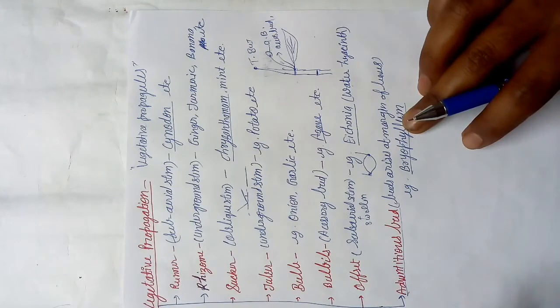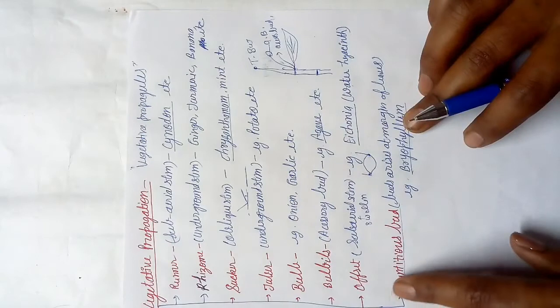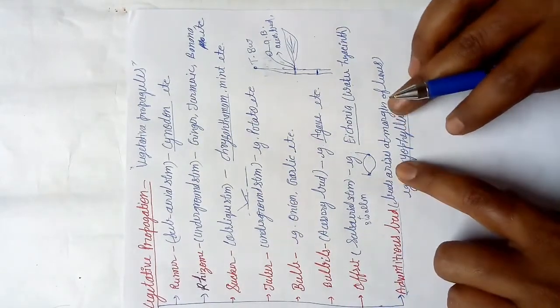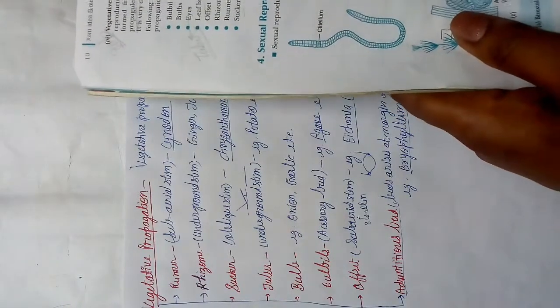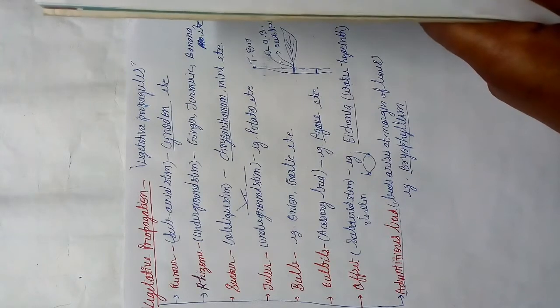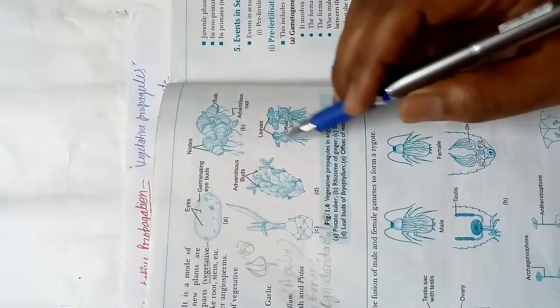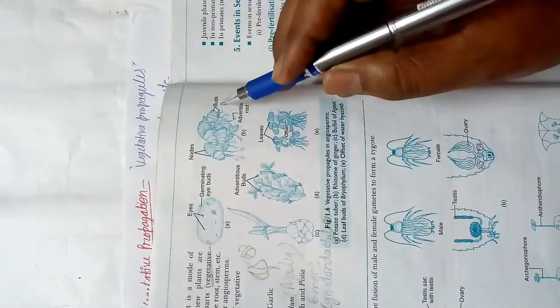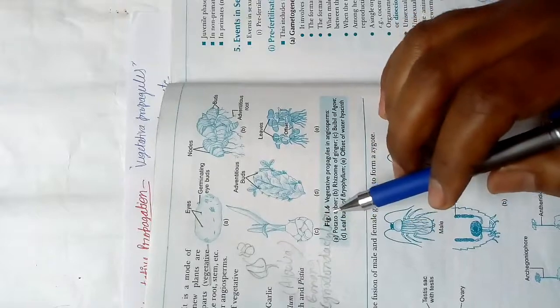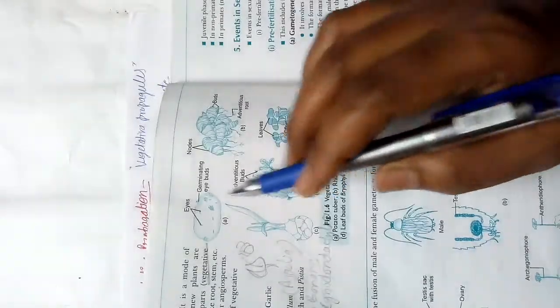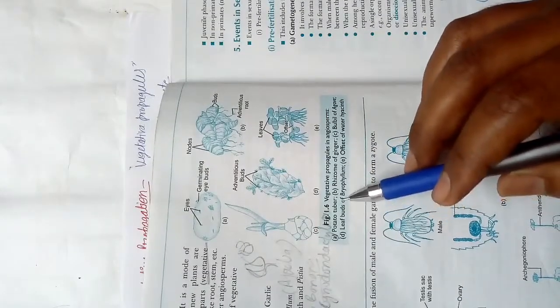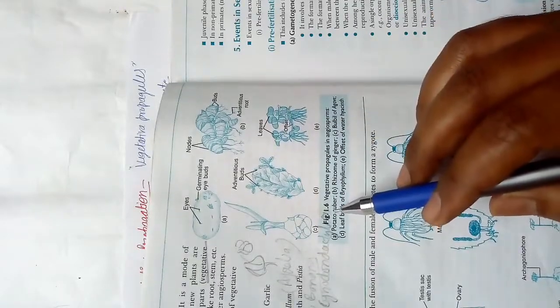Adventitious bud: buds arise at the margin of the leaves. The example is Bryophyllum (called 'azuba' in Hindi). In the diagram you can see the different structures of vegetative propagation — offset, water hyacinth, adventitious roots, buds, nodes of turmeric, and Bryophyllum.